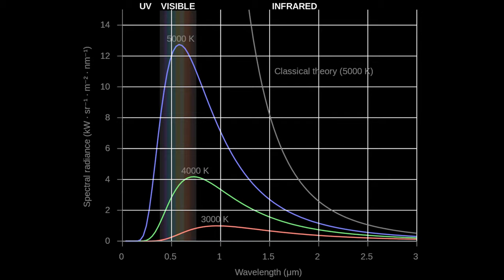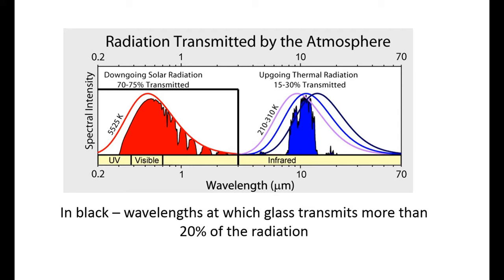An important material used in our model is glass. Since glass is transparent, it obviously transfers visible light. But what's interesting is that glass does not transmit infrared. Therefore, if we want to heat a certain object using the sun's light and not allow it to cool down by emitting black body radiation, we can simply place it in a glass box.